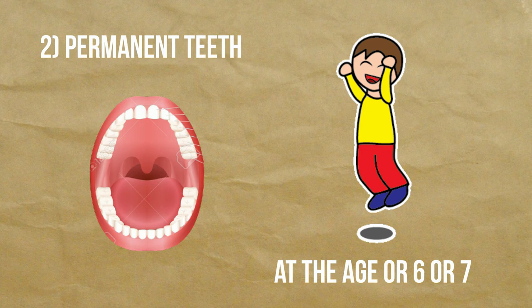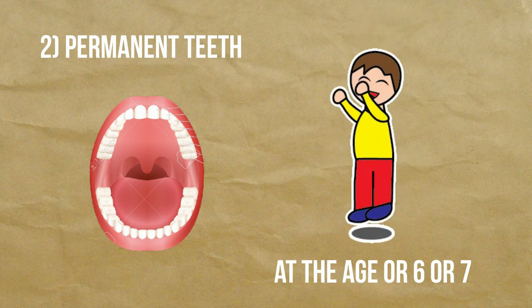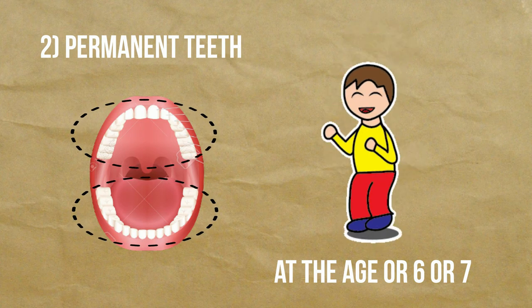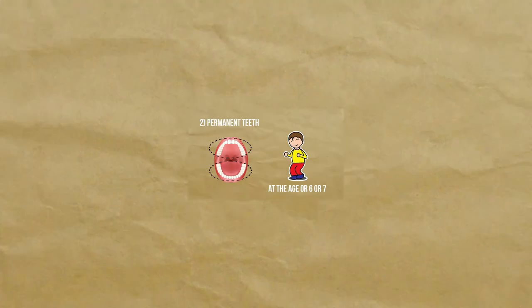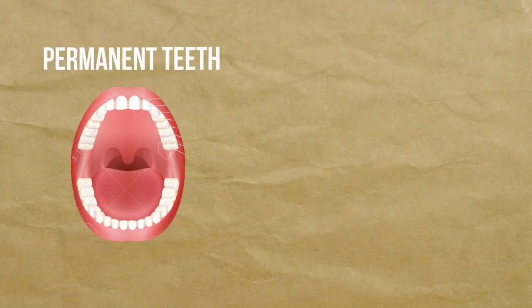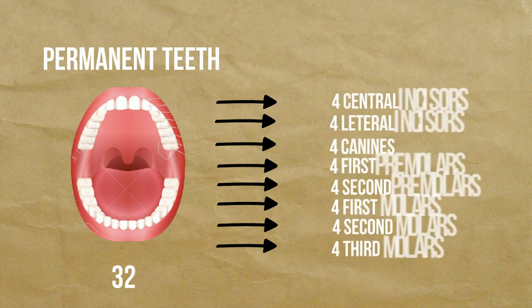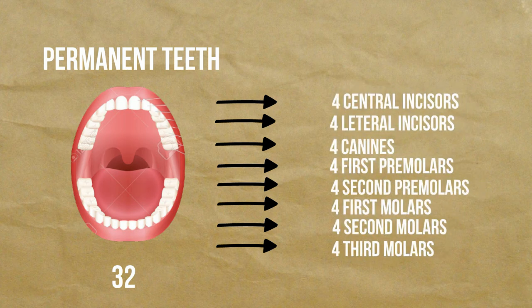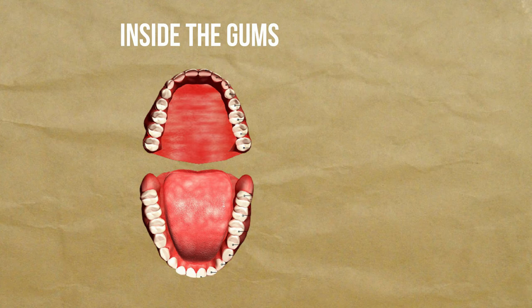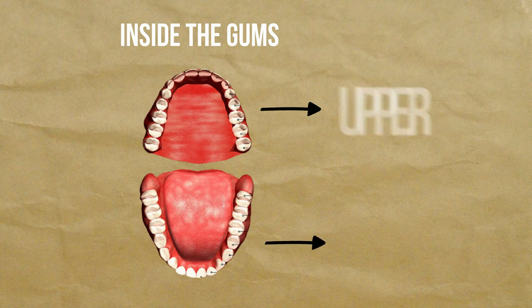At the age of six or seven, a new set of teeth starts to grow, which replaces the milk teeth. These are known as permanent teeth and are 32 in number. Like primary teeth, the set of permanent teeth also develops before a child is born, layered underneath the set of primary teeth inside the gums on both upper and lower jaws.